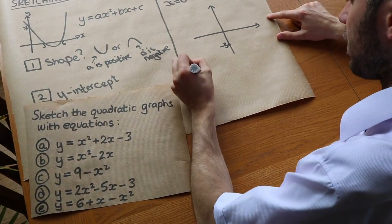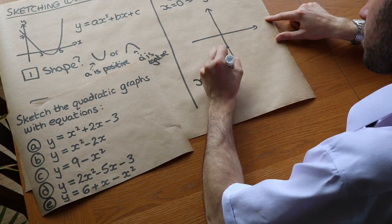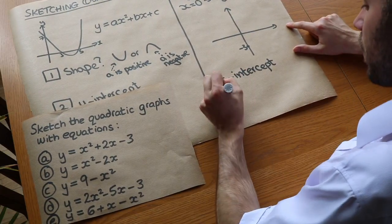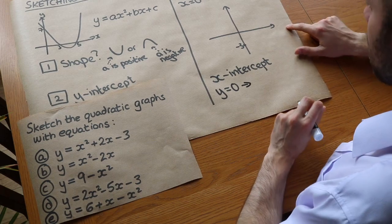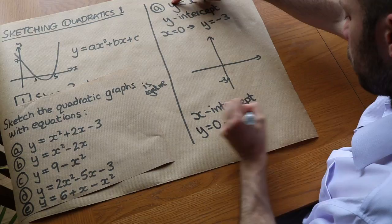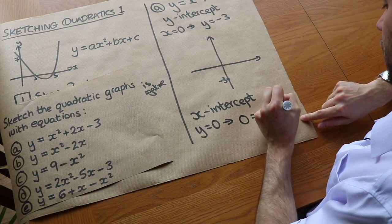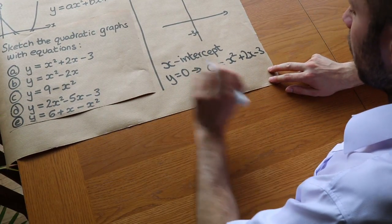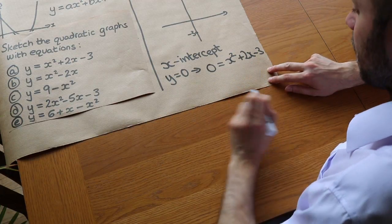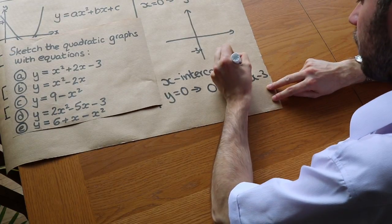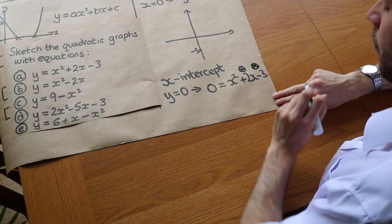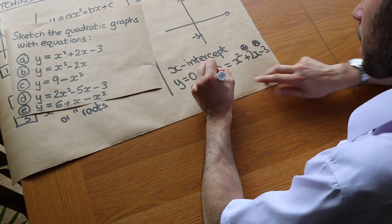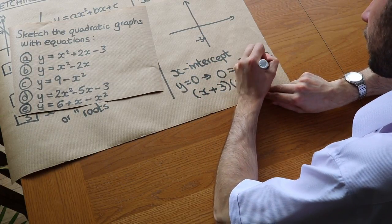The next thing is to find the x-intercepts. When we're on the x-axis, the y-value is 0, so we make y equal to 0: 0 equals x squared plus 2x minus 3. We need to factorise this — two numbers that add to give 2 and multiply to give minus 3. That's 3 and minus 1, so we can factorise it as x plus 3 times x minus 1 equals 0.